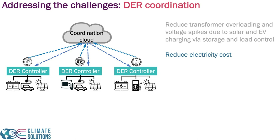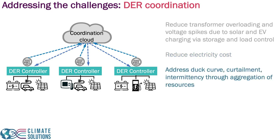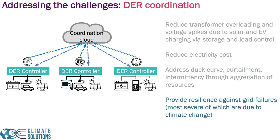We can reduce electricity costs to consumers by having them consume more when renewables are high. We can address the duck curve, curtailment, and intermittency through the aggregation of resources. By aggregating all these resources together and managing them intelligently, we can have the load follow renewables — not just supply follows demand, but supply and demand meet each other. Finally, the coordination can ensure the grid becomes a lot more resilient against grid failures, including those caused by climate change — for example, storing power and utilizing it for critical services during moments of extreme weather events.